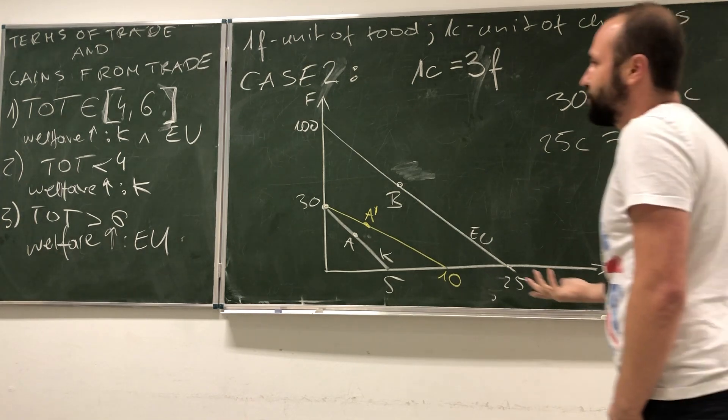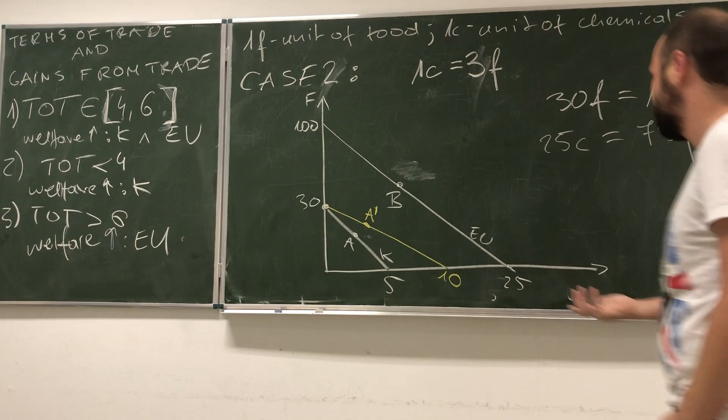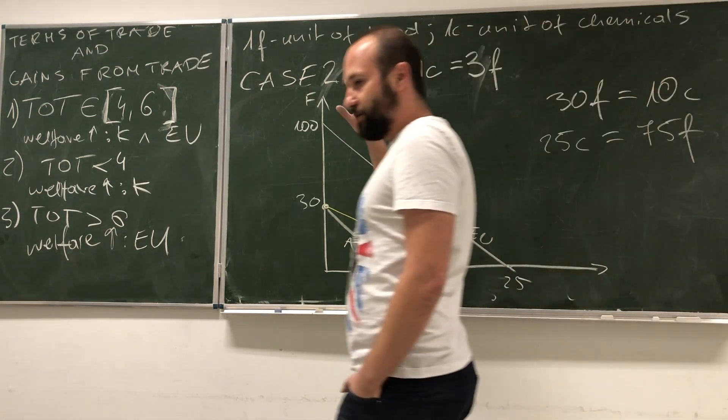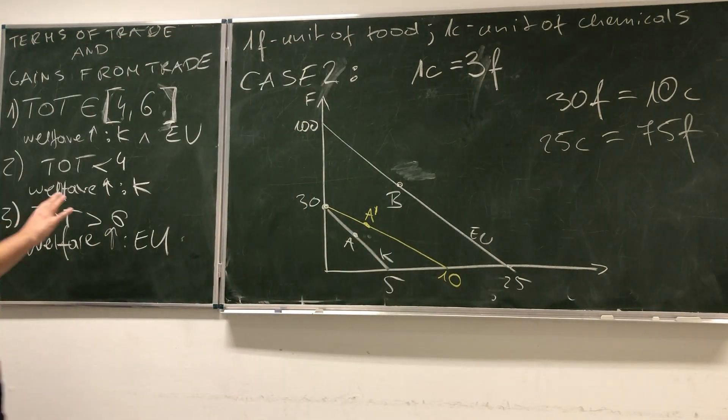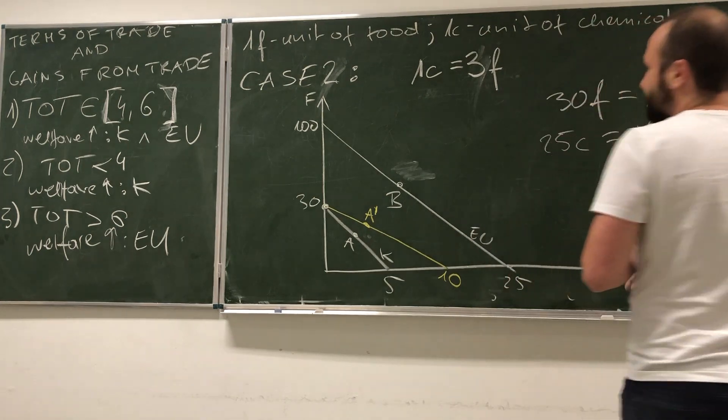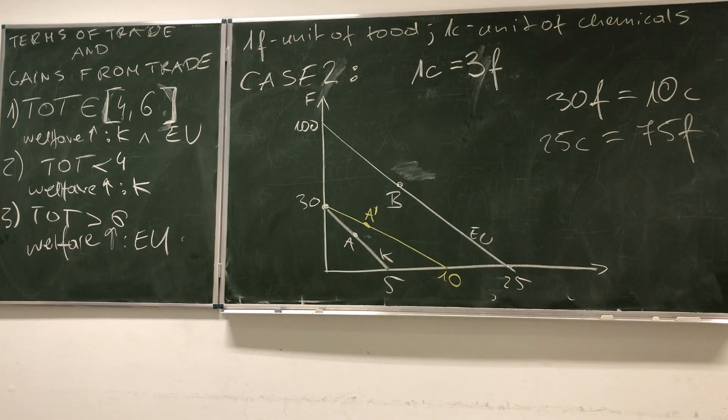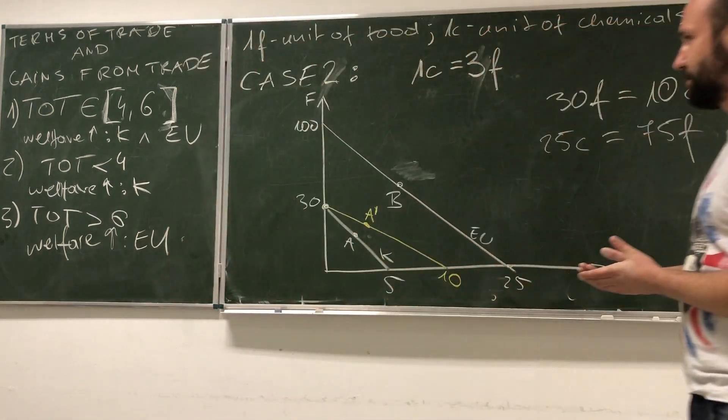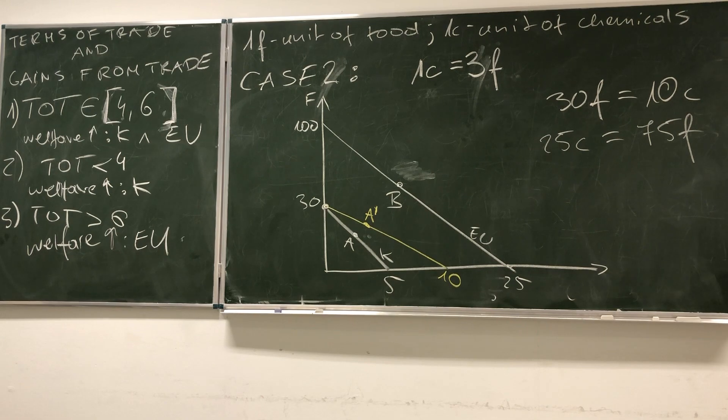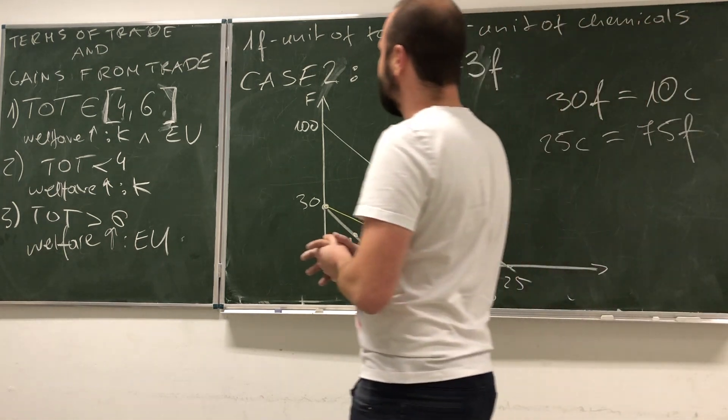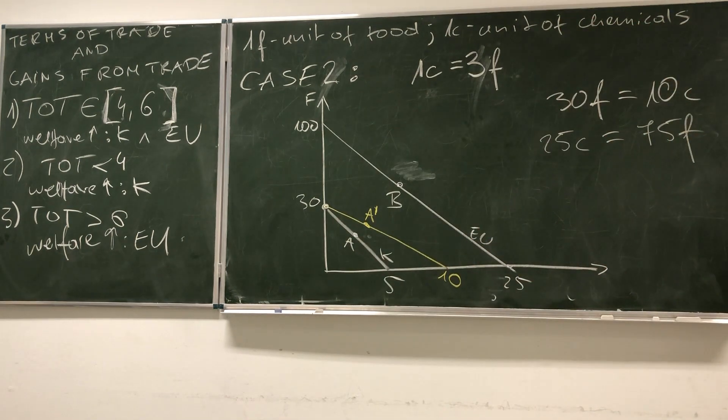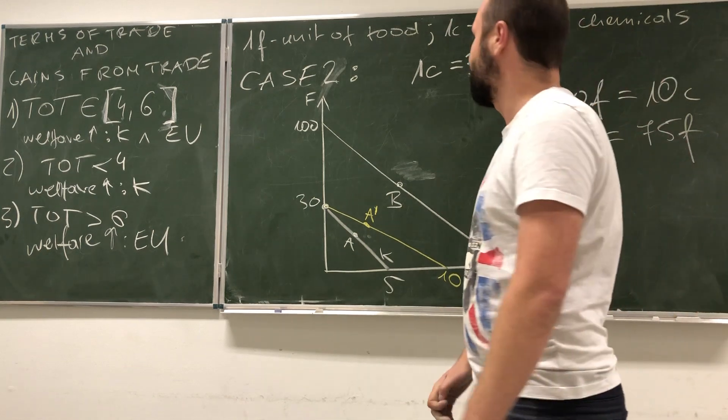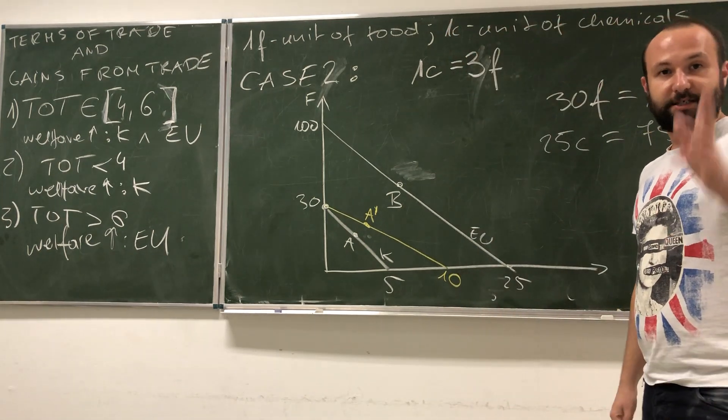We've also learned that those benefits from trade depend on terms of trade, so the ratio in which we exchange goods. This is it about the general information about the Ricardo model. In the next video, I'm going to show you two possible extensions of this model and how they change the results. And then later, we will look at some empirics of the comparative advantage model. See you in the next video.